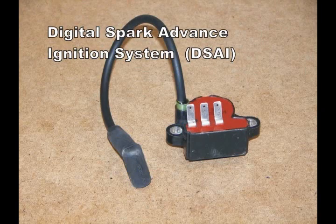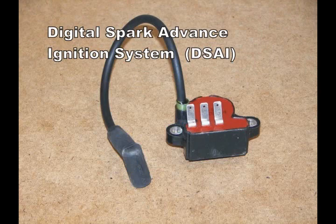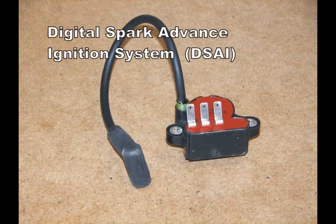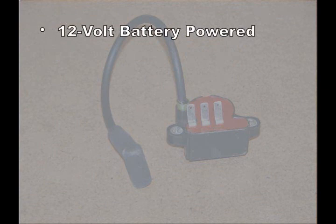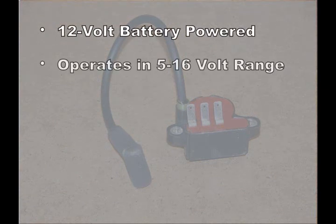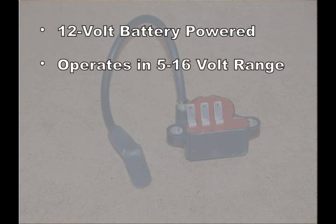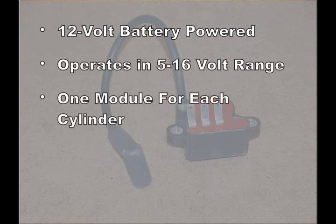The digital spark advance ignition is designed to meet Kohler specifications. The DSAI is a 12 volt battery powered inductive microprocessor controlled ignition module, capable of operating within a system voltage range of 5 to 16 volts. An individual DSAI module is used on each cylinder.